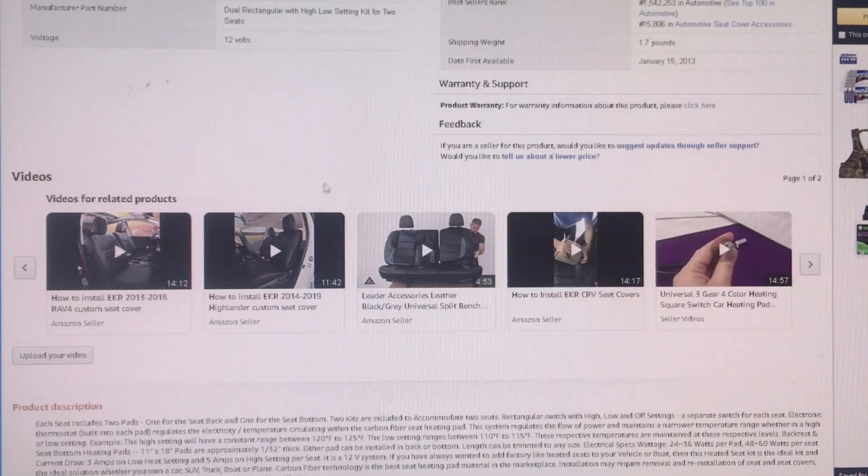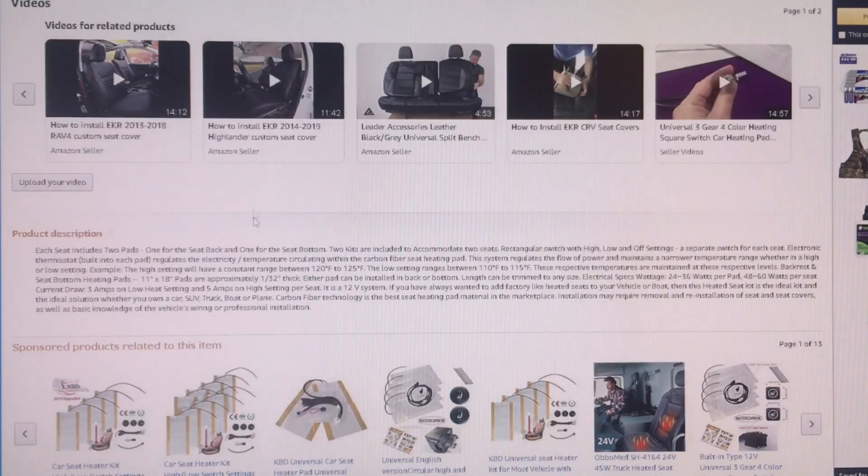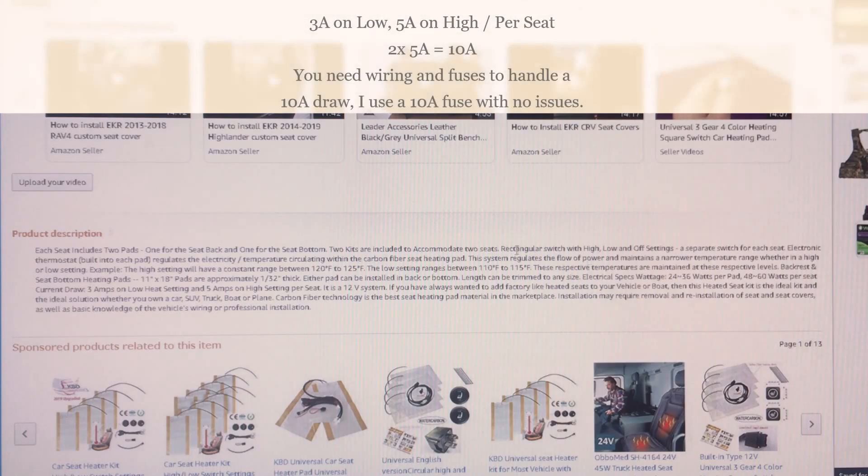Packaging information, which isn't very helpful. But in the description, the description here is very helpful. Each seat includes two pads, one for the seat back and one for the seat bottom. So the kit accommodates two seats. It has rectangular switches for high low and off settings, a separate switch for each seat. And the pads are 11 inches by 18 inches and approximately one 32nd thick. Either pad can be installed on the back or the bottom. They're all the same pads.